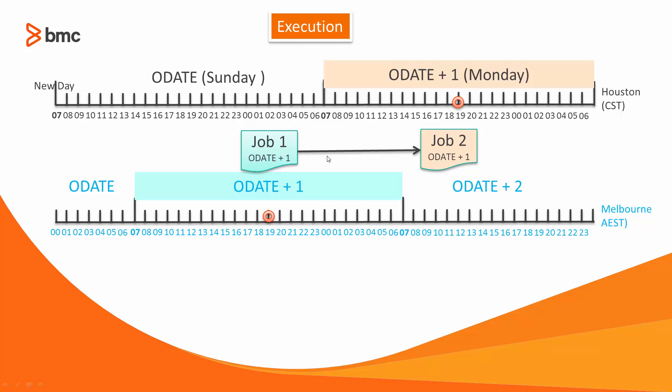In this example, both jobs are placed in AJF on Sunday Central Standard Time, however with run date option to execute on Monday at their designated time zone. On Sunday at 1400 Houston time, which is also 7 a.m. Melbourne time, the first job becomes eligible to run because the New Day time at the time zone has arrived, and the job runs based on its front time, 1900 AEST. At 7 a.m. Central Time on Monday, the second job is now eligible to run because that is the start of the New Day in Houston, and based on its front time, the job will run at 1900 CST.